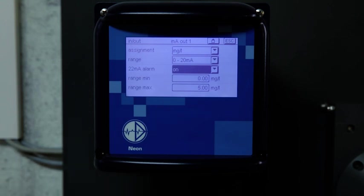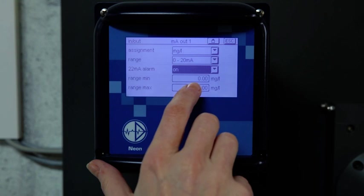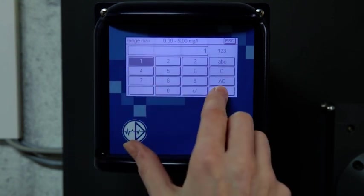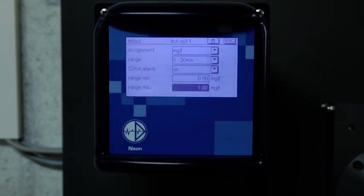The milliampere output can be scaled if you are interested in just a certain section of the measuring range, for example 0 to 1 milligram per litre. The minimum value always corresponds to the minimum milliampere value, in this case 0 milliampere. The maximum value corresponds to 20 milliampere.